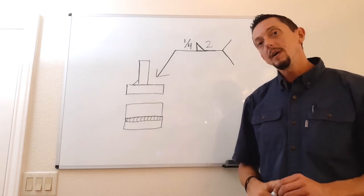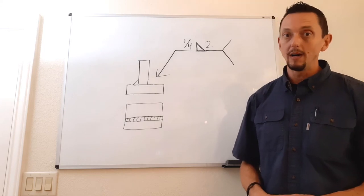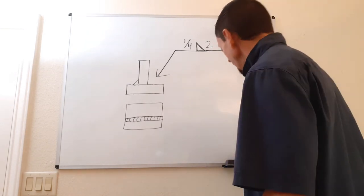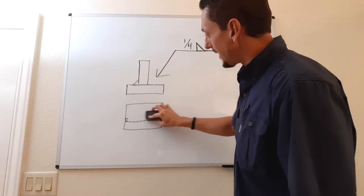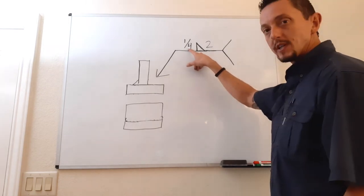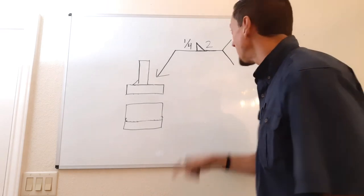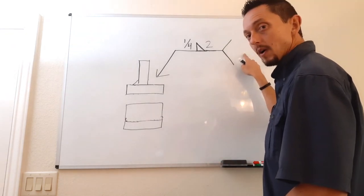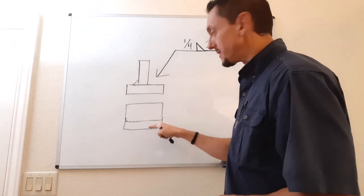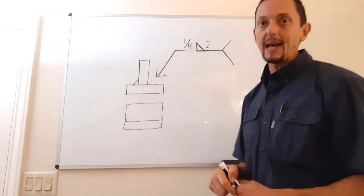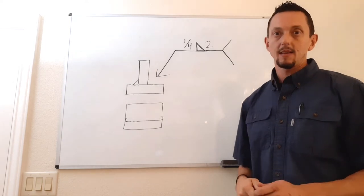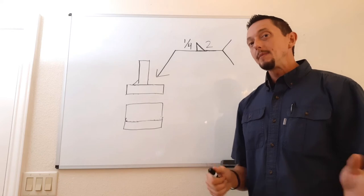If we only have one number, we don't really know where along the joint to place it. Usually the tail section may specify something like 'centered on joint' or they may actually draw it on the print with an arrow. The first space to the right of the weld symbol always has to do with length.